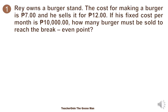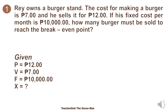Let's have our example number one. Ray owns a burger stand. The cost for making a burger is 7 pesos, and he sells it for 12 pesos. His fixed cost per month is 10,000 pesos. How many burgers must be sold to reach the break-even point? Let's identify the given: the price per unit is 12 pesos, the variable cost is 7 pesos, the fixed cost is 10,000 pesos, and we want to find out the number of units to break-even.